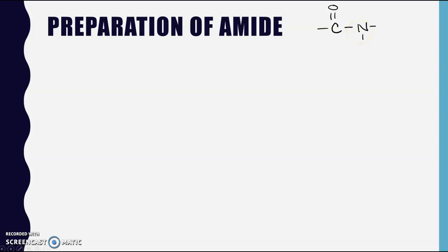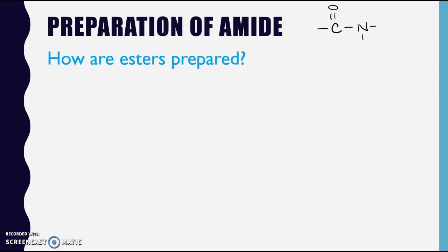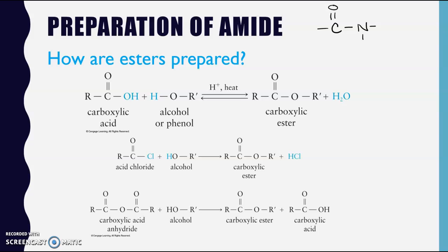Before we do that, let's review how esters are prepared. The reason for that is we're going to see some overall similarities between those two processes. If you can remember how an ester was prepared, which we learned about in chapter 14, that's going to help you in talking about how an amide is prepared. An ester is prepared in one of three ways.